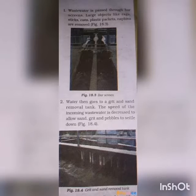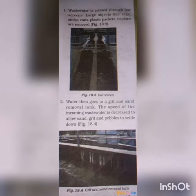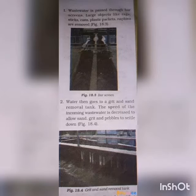We will see the steps one by one. The first step is the removal of large items or large impurities. The wastewater is passed through bar screens. The large objects like rags, sticks, cans, plastic packets and napkins are removed in the bar screen.